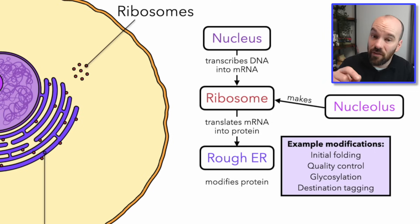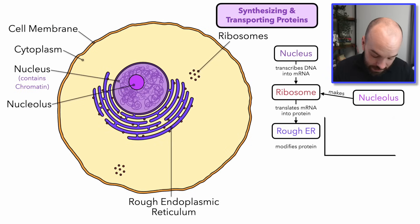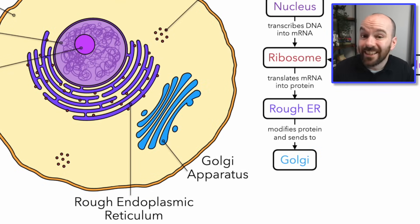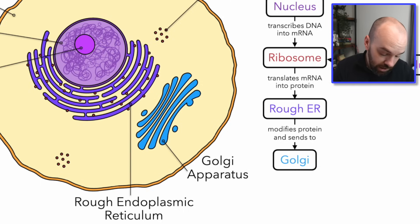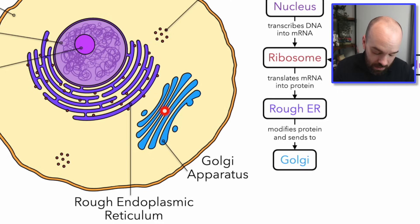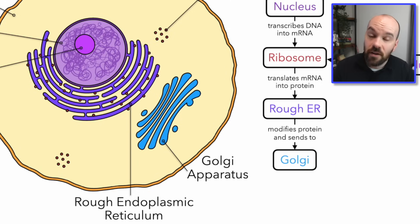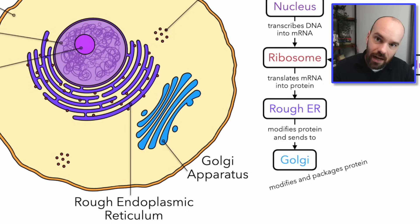The big thing to remember is that the rough endoplasmic reticulum is going to be modifying these proteins, getting them ready to go out and do their function. After it goes through the rough ER, it's going to be packaged and sent to the Golgi apparatus. The Golgi apparatus has two sides — the cis side and the trans side. The protein passes through the cis end and then out the trans end. The Golgi apparatus can do further modifications, and it's also going to package the protein in a vesicle so it can be sent to wherever it needs to go.